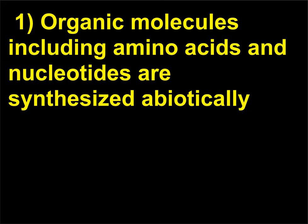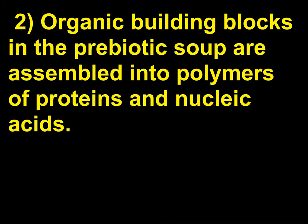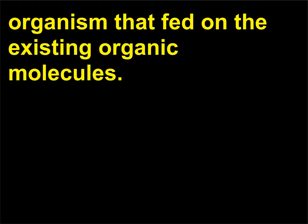The steps of the Oparin-Haldane model are: 1. Organic molecules including amino acids and nucleotides are synthesized abiotically — without living cells. 2. Organic building blocks in the prebiotic soup are assembled into polymers of proteins and nucleic acids. 3. Biological polymers are assembled into a self-replicating organism that fed on the existing organic molecules.